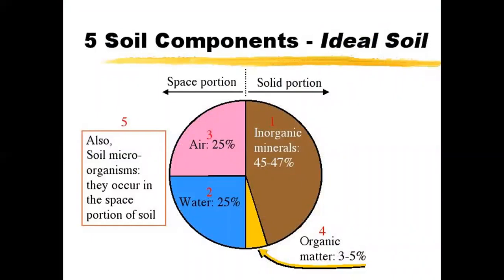Now, this is the components of an ideal soil — really what we want to see. About 50% of the soil is going to be made up of the solid portion, and the majority of that are the inorganic minerals: the sands, silts, and clays. A smaller portion is made up by organic matter, usually about three to five percent, though you can get more in soils with high organic matter content. Even though it's a small amount, organic matter goes a long way towards coloring the soil that nice dark, rich color we associate with a fertile soil, and it provides a lot of added benefits.